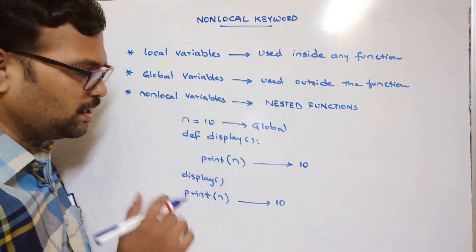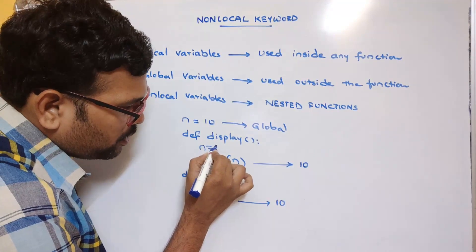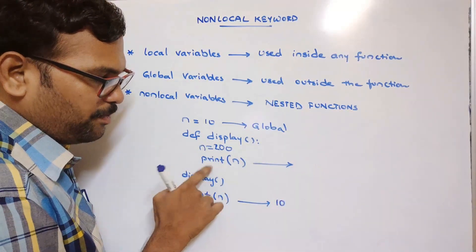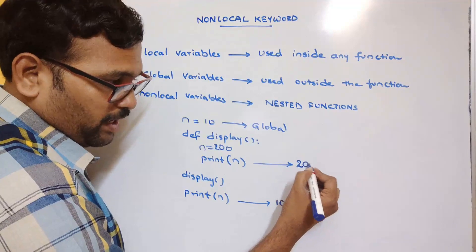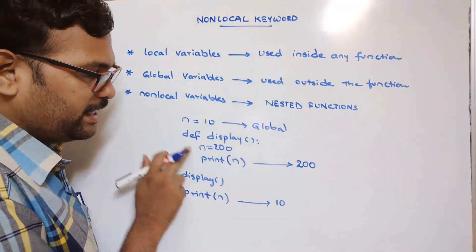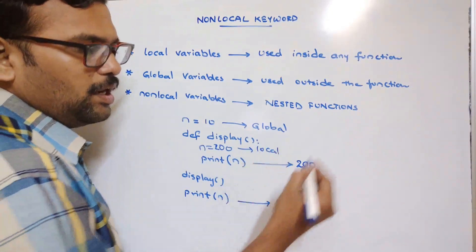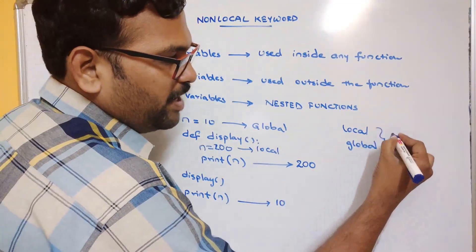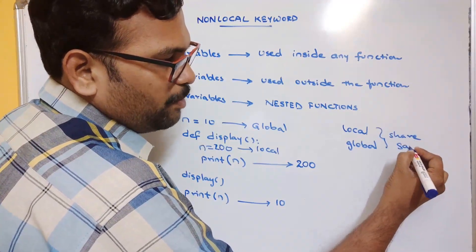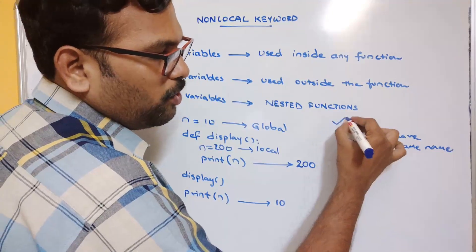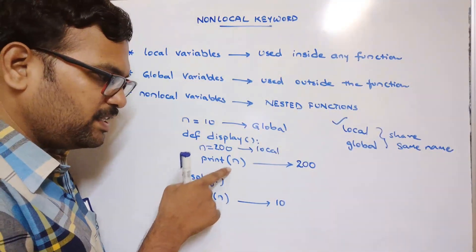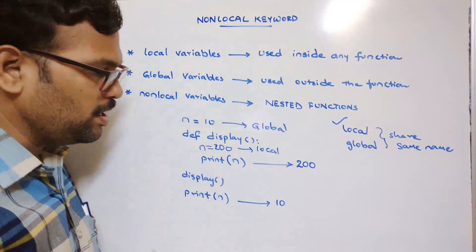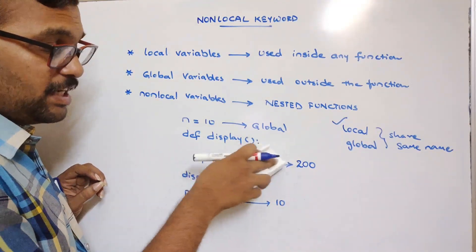If you declare n = 200 inside the display function, then inside the function n will be 200 because this is a local variable. When both a local variable and a global variable share the same name, the first preference is given to the local variable. So printing n inside the function gives 200.